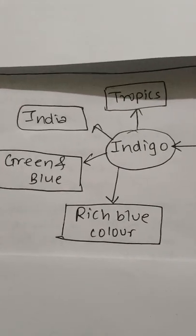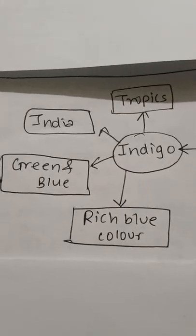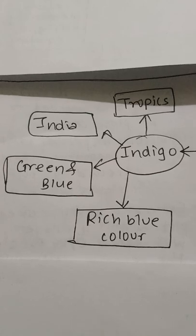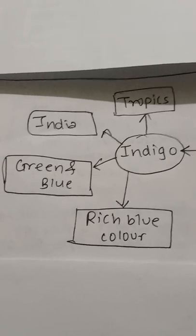Indigo was grown in tropic regions in India. Later, it was also grown in the west side.